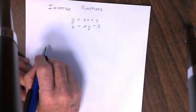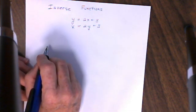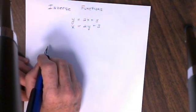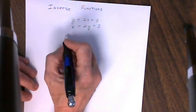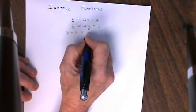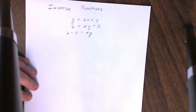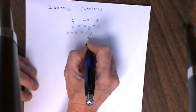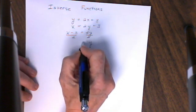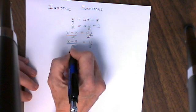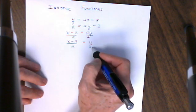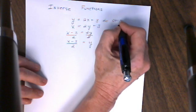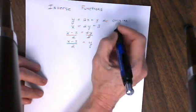The second thing I'm going to do is solve the equation for y, which means get the y alone on one side of the equation. To do that, I'm going to subtract 3 from both sides of the equation. Next, to get y alone, I'm going to divide both sides of my equation by 2. I find that y is equal to x minus 3 divided by 2. This is my original equation, and this new one is my inverse equation.